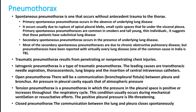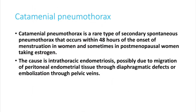Another important condition is catamenial pneumothorax. This occurs in female patients. It is a rare type of secondary pneumothorax that occurs within 48 hours of the onset of the menstrual cycle, or sometimes in postmenopausal women taking estrogen tablets.